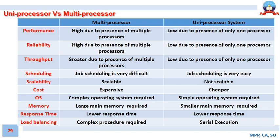Regarding response time — which is the time between a request being sent and the response being received: a multiprocessor system has a very low response time, capable of responding to requests within a shorter period. In a uniprocessor system, response time is considerably high because jobs are executed sequentially, so the time between request and response is longer.